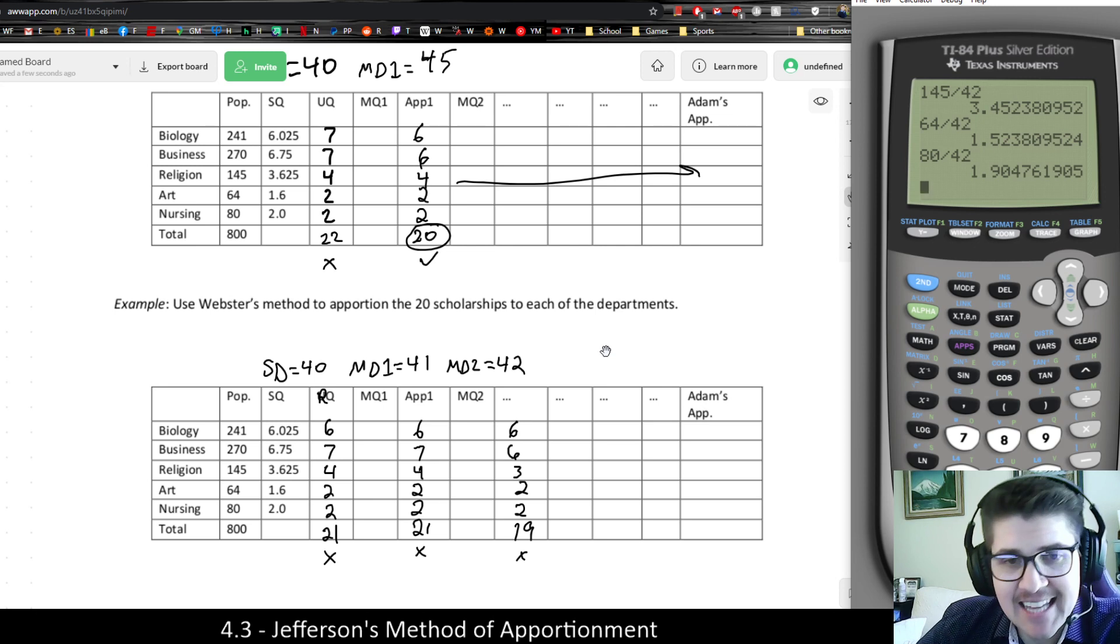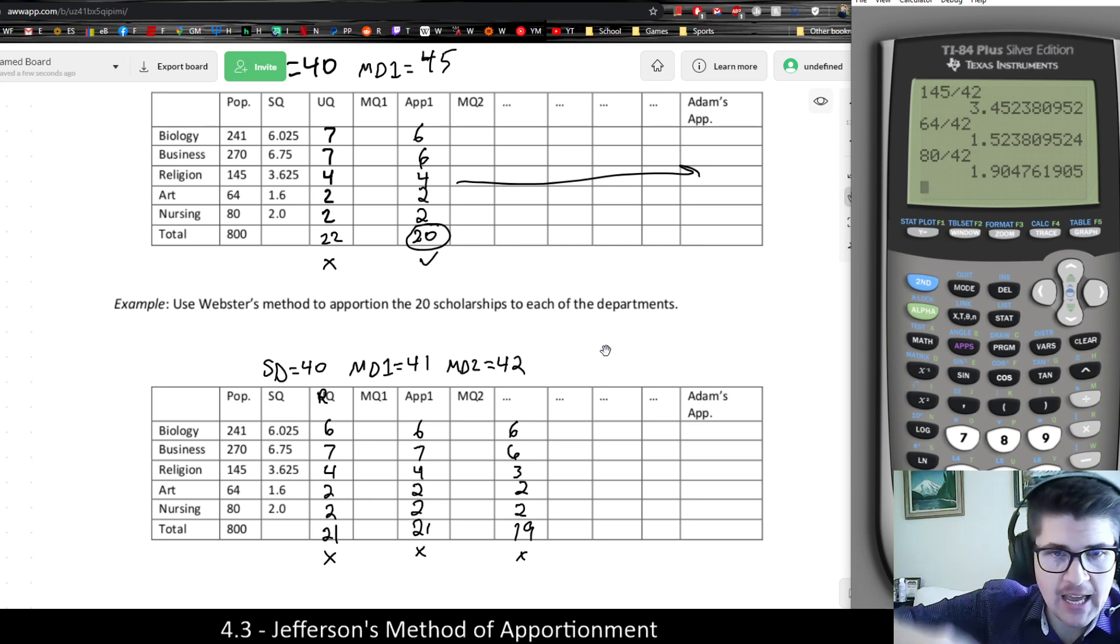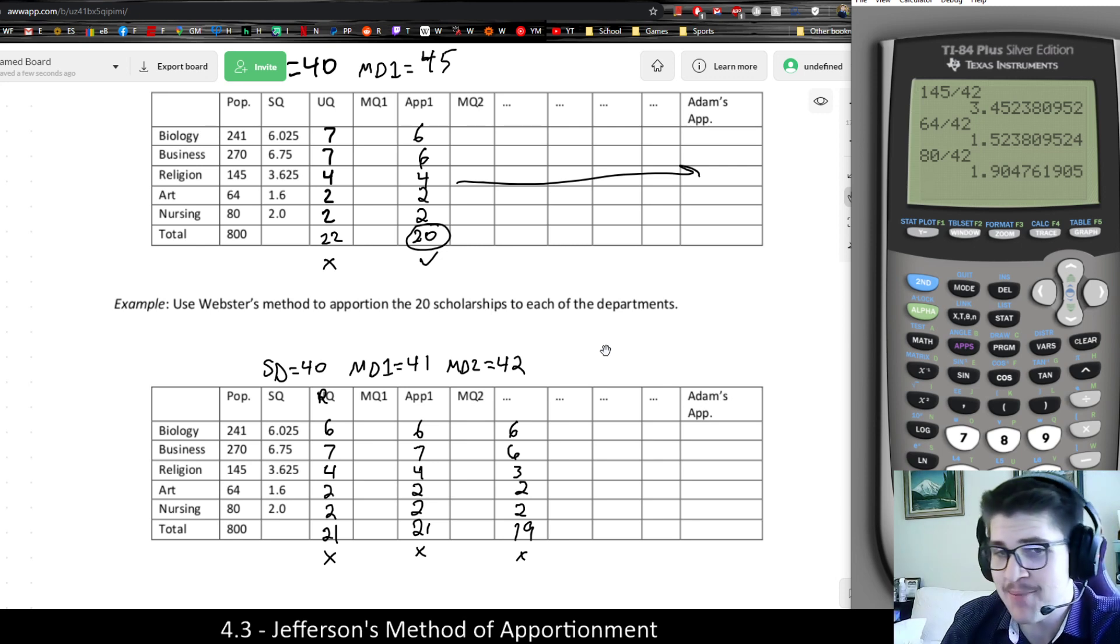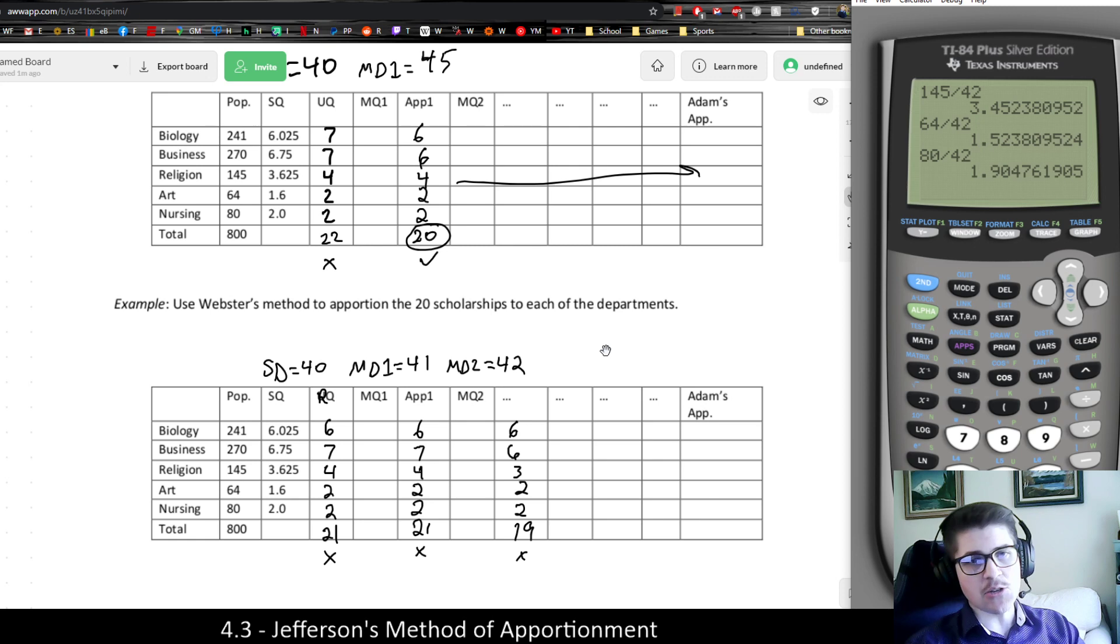That is Webster's method. At the end of the day, Jefferson's, Webster's, Adams, and even Huntington Hill, they're all really the same method. The only difference is the rounding paradigm. That was pretty much every type of rounding. Up, down, rounded. What other types of rounding are there? The next method, which is called the Huntington Hill method, uses an entirely different rounding system. And then in the last section of Chapter 4, we're going to talk about fairness, paradoxes. What are the strengths and weaknesses of each method? And what was kind of the final conclusion in terms of the U.S. method of apportionment?